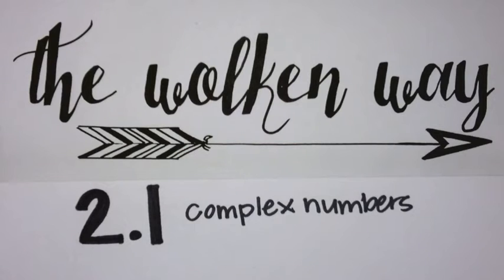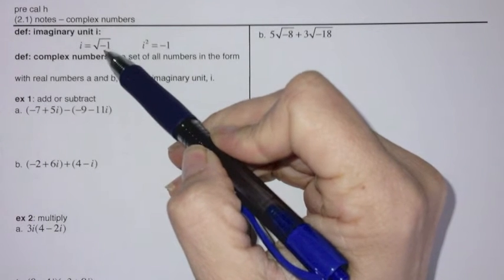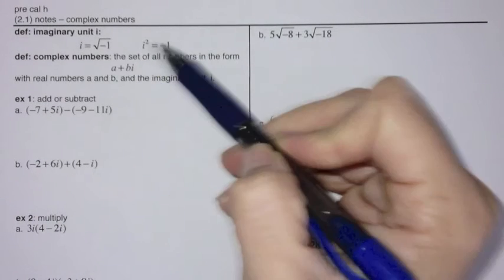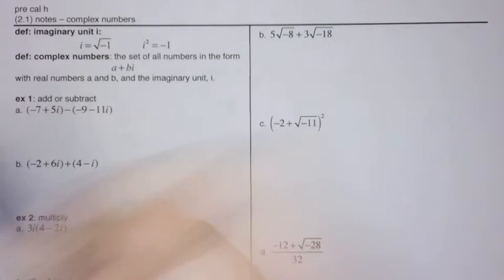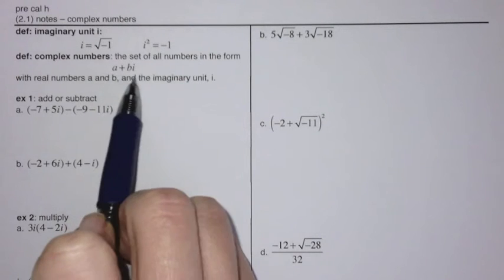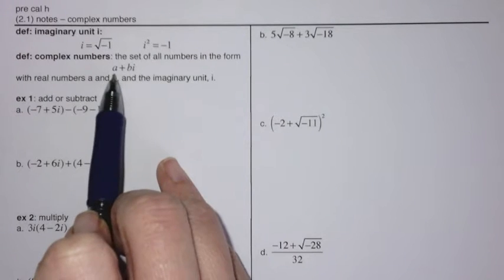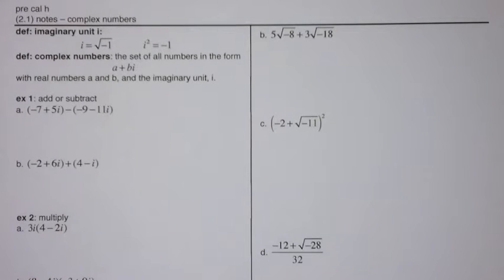Today we start talking about imaginary numbers, specifically the imaginary unit i. i is defined as the square root of negative 1, therefore when you square both sides, i squared equals negative 1. A complex number is the set of all numbers in the form a plus bi, with real numbers a and b and the imaginary unit i. A real number is anything but an imaginary number — pi is a real number, square root of 2 is a real number, etc.